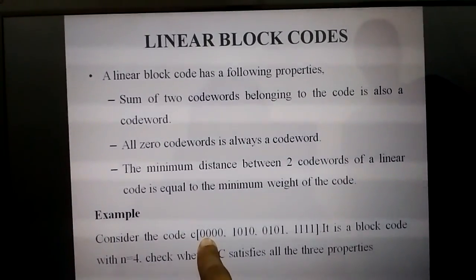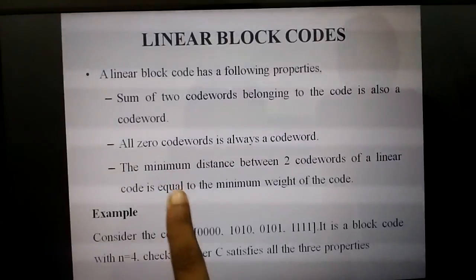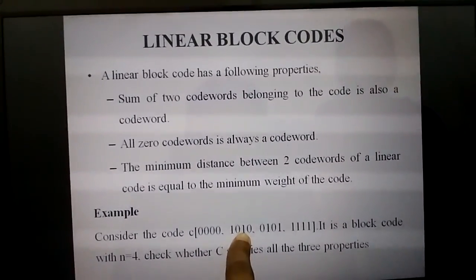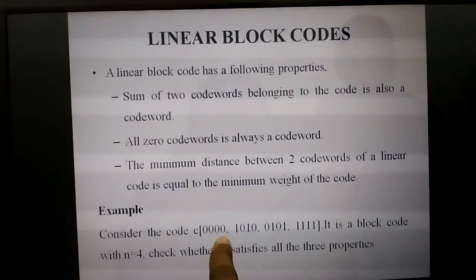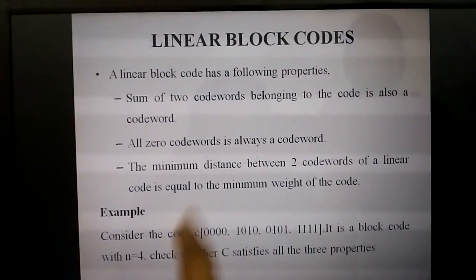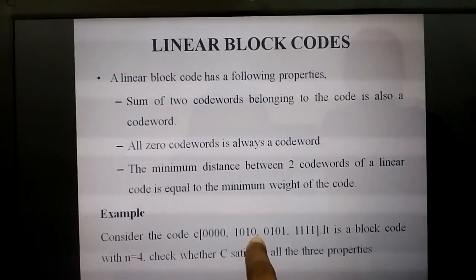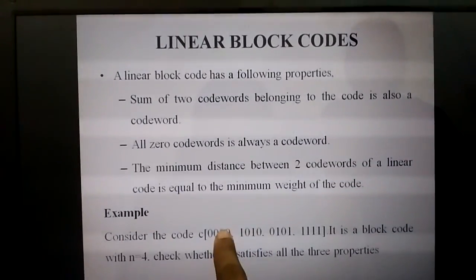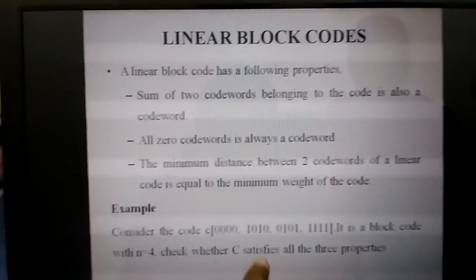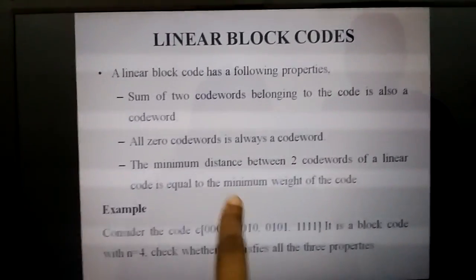Comparing 0000 and 1010: the first bit is 0 versus 1, so it changed. The second bit is 0 versus 0, no change. The third bit is 0 versus 1, it changed. The fourth bit is 0 versus 0, no change. The number of positions where bits changed is two, so the minimum distance between these two code words is two.